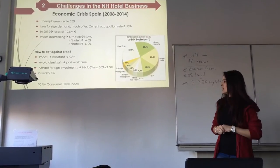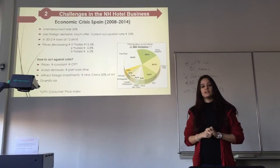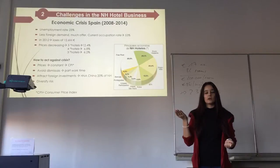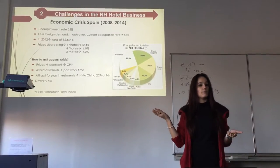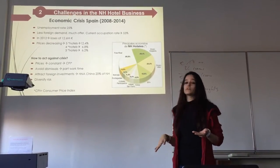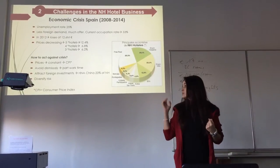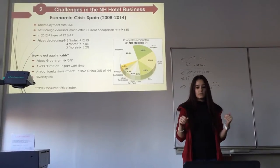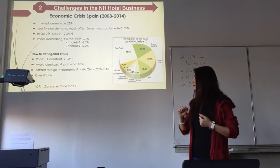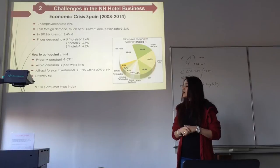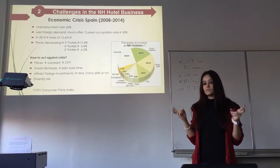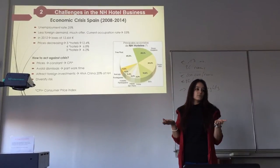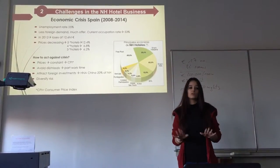Some measures I consider very useful as a manager: instead of increasing or decreasing prices aggressively, we're trying to keep prices constant and adjust them based on the CPI — the Consumer Price Index — which represents the average cost of living. If prices increase due to inflation, we increase our prices in the same proportion, and if they decrease, we do exactly the same.